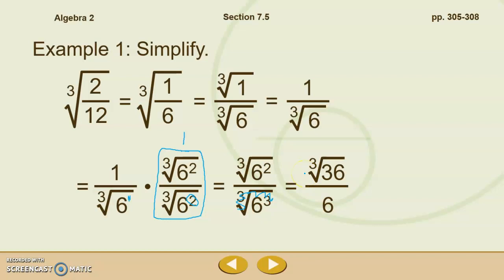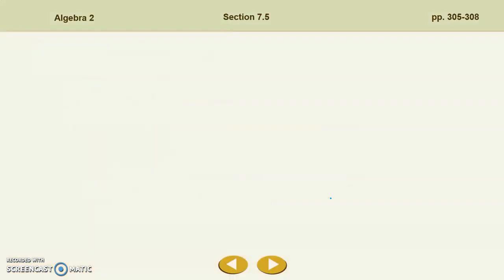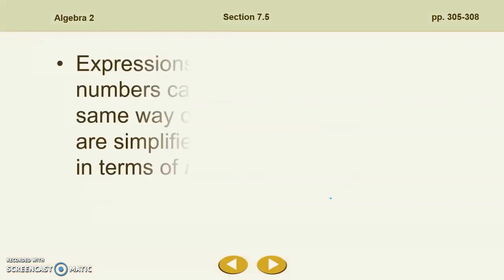Let's go through our rules. There are no perfect nth powers in the radicand — 36 is a perfect square but not a perfect cube, so we're good there. There are no fractions in the radicand — the radicand is 36, that's not a fraction. And there are no radicals in the denominator. Check, check, check — it looks like my answer has been completely simplified.